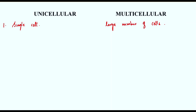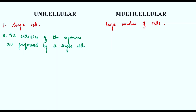In unicellular organisms, all the activities of the organism — respiration, excretion, everything — are performed by a single cell only. But in the case of multicellular organisms, a single cell performs one or few activities only. For example, a skin cell is used only for protection, and a red blood cell is used for exchange of gases and nutrients.